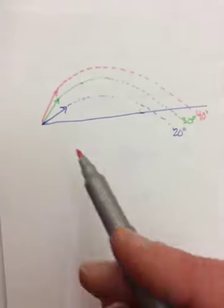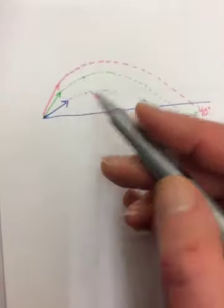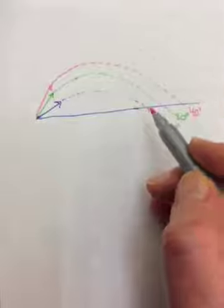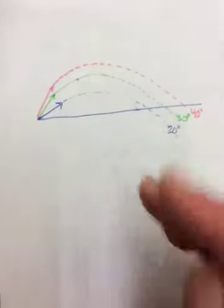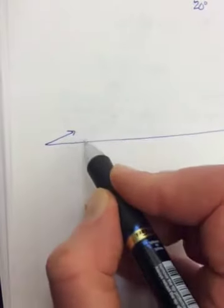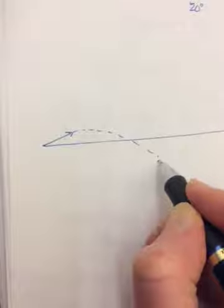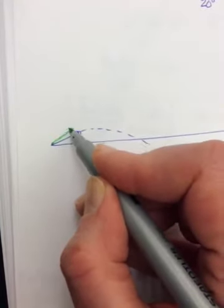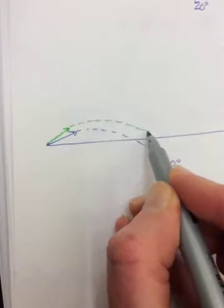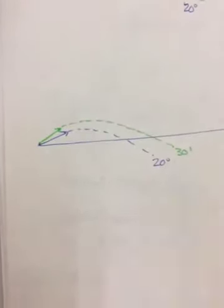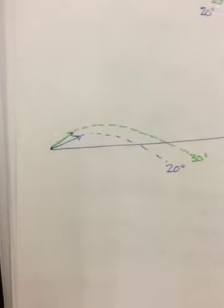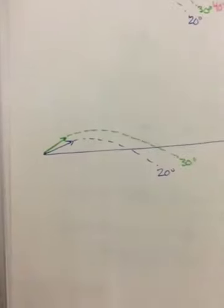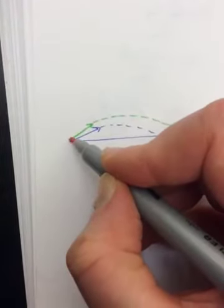Again, it will go out further. But there's going to come a point where it's going to be so far up that it's not going to have a very big x component. I need to redraw because I didn't do my angles very well. So let's make this 20. Let's see if I can make my 30 look more reasonable like 30. And we'll make this one 40.